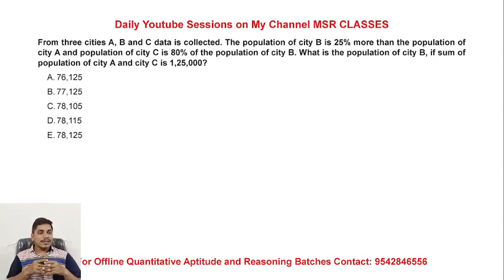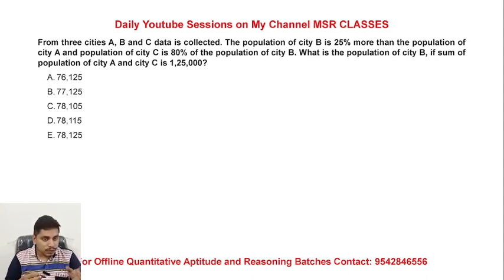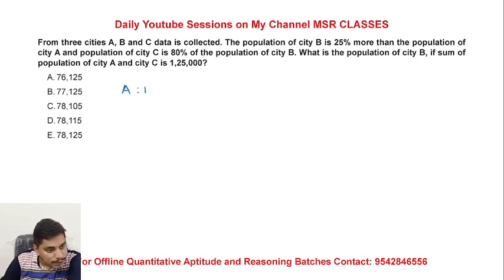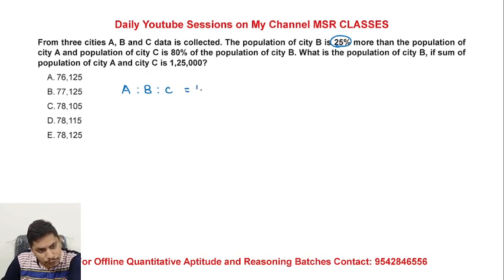From 3 cities A, B, C, data is collected. The population of city B is 25% more than city A, and the population of city A is 80% of city C. The ratio of populations A, B, C — B is 25% more than city A.